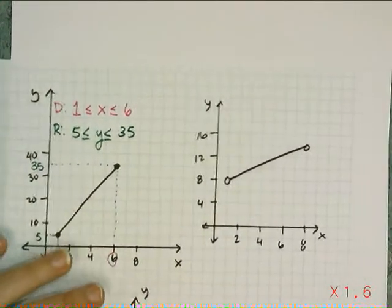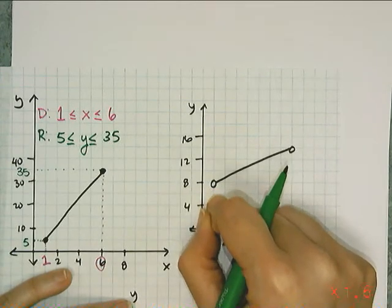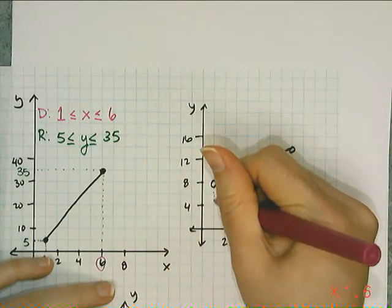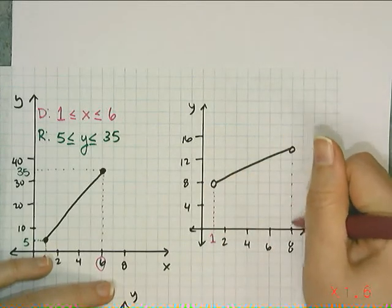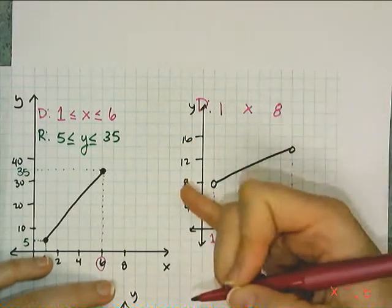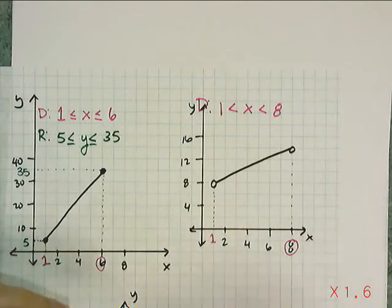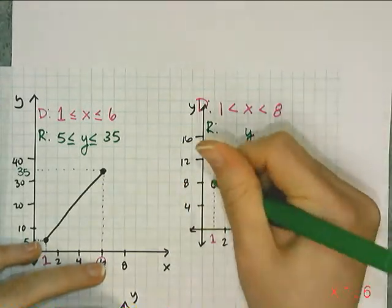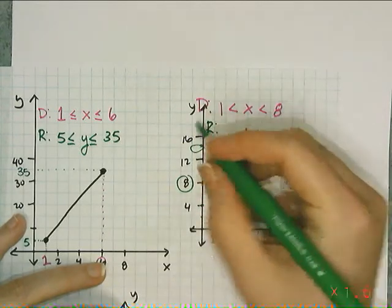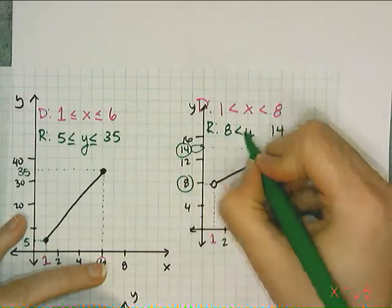Now let's contrast with the graph that has open dots. Open dots are exclusive endpoints — they do not contain the endpoints and use strictly less than. The lowest x value is 1 and the highest is 8, so the domain is 1 strictly less than x strictly less than 8. For the range, the lowest y value is 8 and the highest is 14 — counting by 2 — so the range is 8 strictly less than y strictly less than 14.